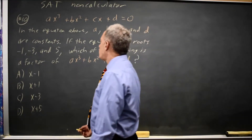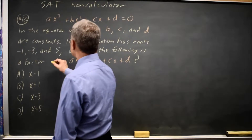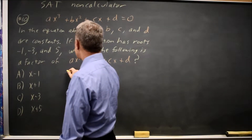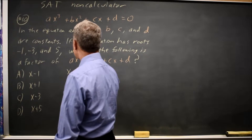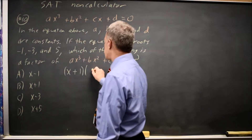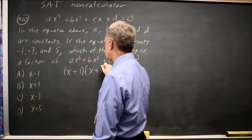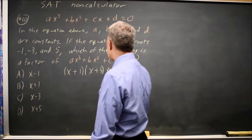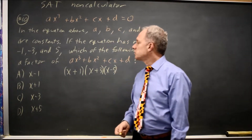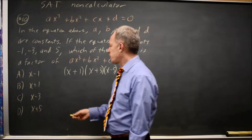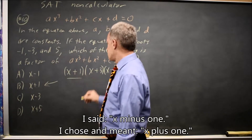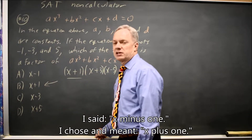There's a theorem with polynomials that says the factors are x minus each root, so x minus negative 1 would be x plus 1, x minus negative 3 would be x plus 3, and x minus 5. These are the factors, and they ask which of these four choices is a factor — and x minus 1 is the first factor I listed.